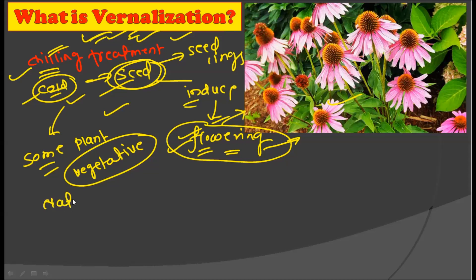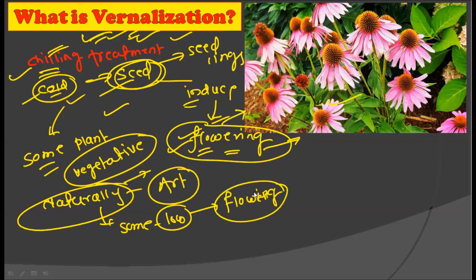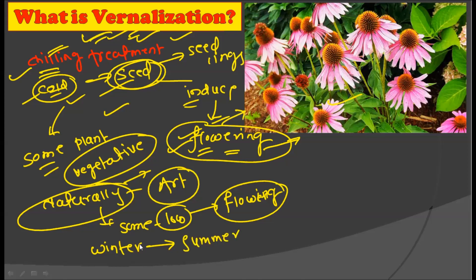Vernalization occurs naturally as well as artificially. Naturally, some plants require very low temperature during seed germination, and this low temperature is quite responsible for inducing flowering in the latter stages of development. Those plants sown in winter will eventually flower in summer, because the winter temperature plays a vital role in producing flowering in the summer. This is the naturally occurring vernalization.